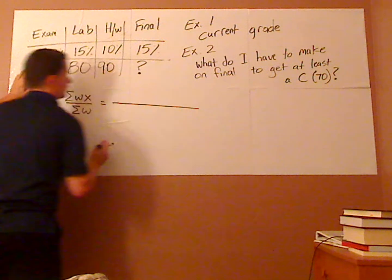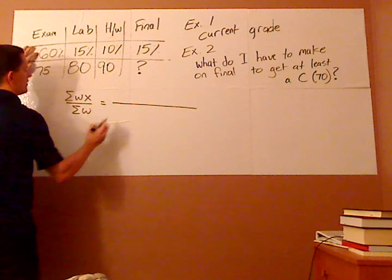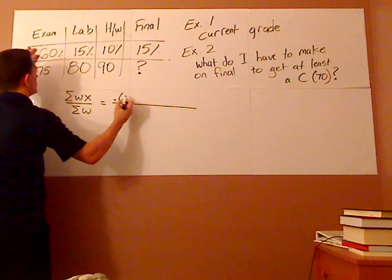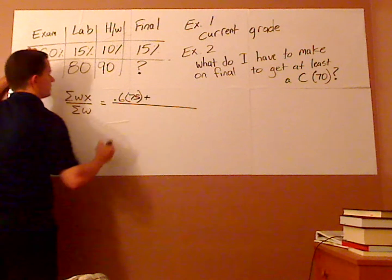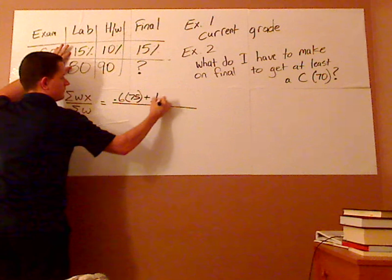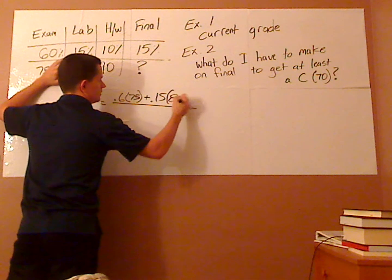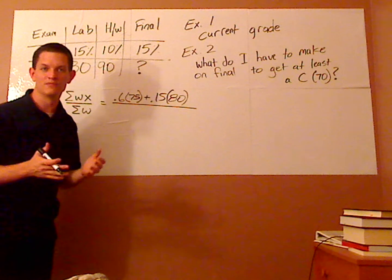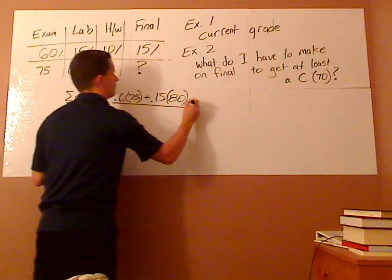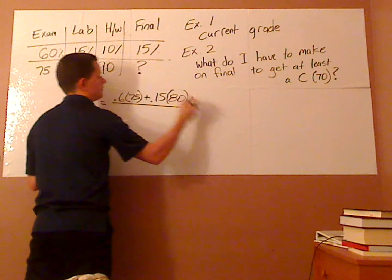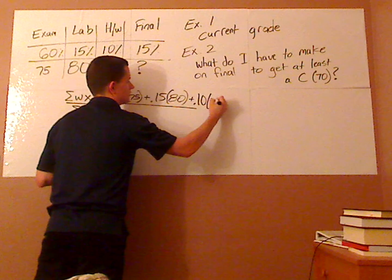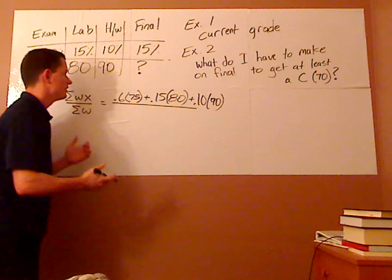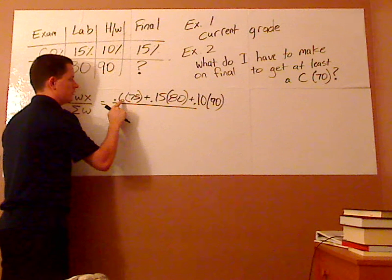So, to calculate this, you're going to have 0.6, which is 60%, but I'm changing it to a decimal, times the 75, plus the weight, which is 15%, times 80. And the 75 or the 80 doesn't really matter if they're a decimal or a whole number, as long as you're consistent. So, plus your 10%, which is your homework, which is 90.